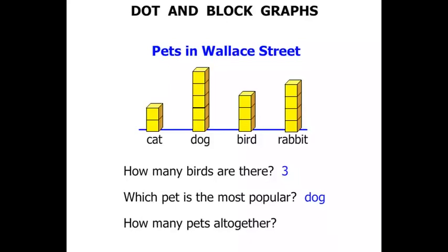How many pets altogether? What we need to do is count the number of blocks. We count: 1, 2 — we had two cats there — then continuing: 3, 4, 5, 6, 7, 8, 9, 10, 11, 12, 13, 14. So 14 pets altogether.